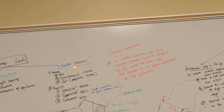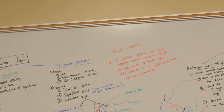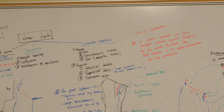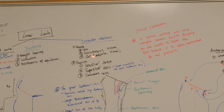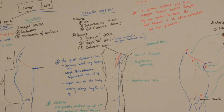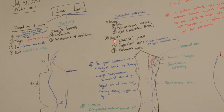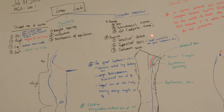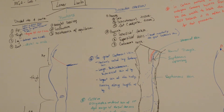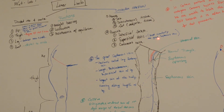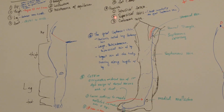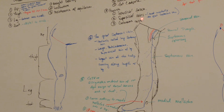Dissection overview: What do we want to remove? We're going to remove the skin, the subcutaneous tissue, and the fat. What do we want to preserve? We want to preserve the superficial fascia, the superficial veins, and most importantly the great saphenous vein. We also want to preserve the cutaneous nerve.